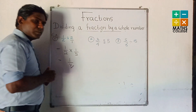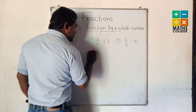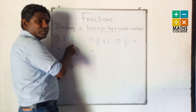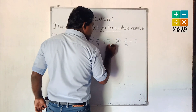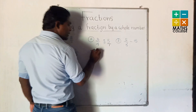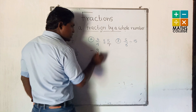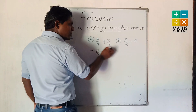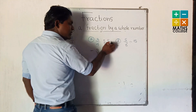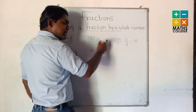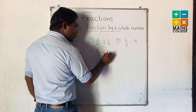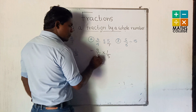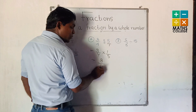Second example: 3 upon 4 divided by 5. According to our previous method: 3 parts not change, this division changes to multiply. And also the divided fraction — interchange as the reciprocal. So reciprocal of 5 upon 1 is 1 upon 5. Then: 3 multiply 1 is 3, and 4 multiply 5 is 20. Answer: 3 upon 20.